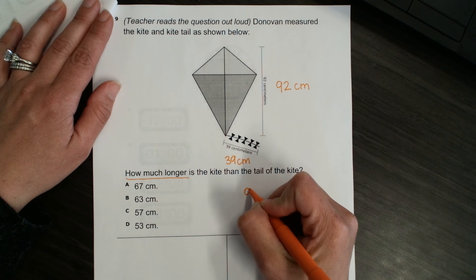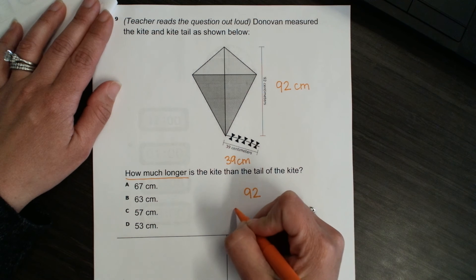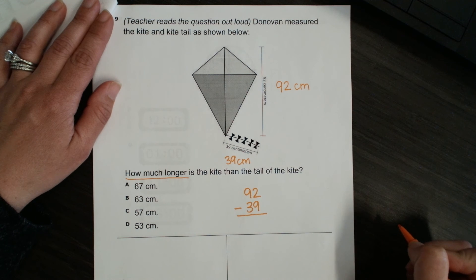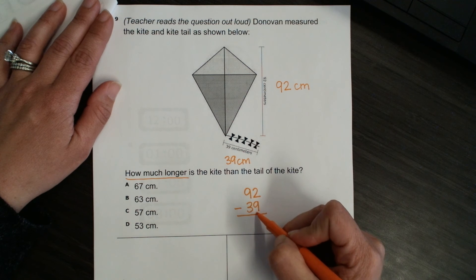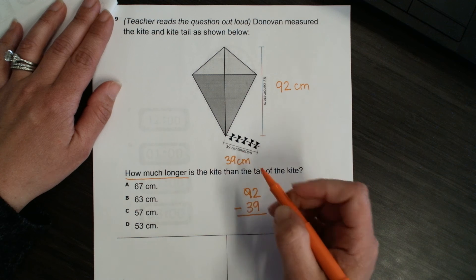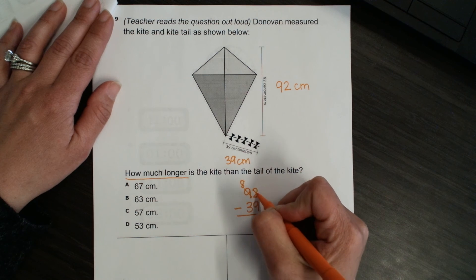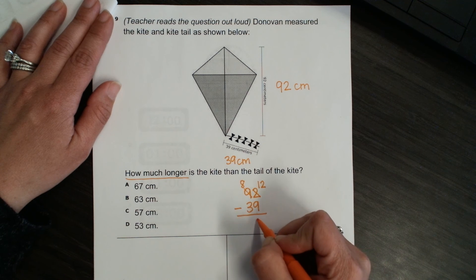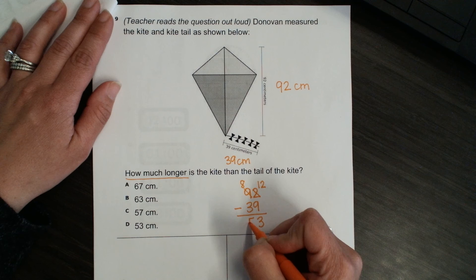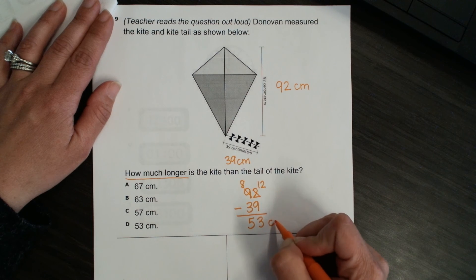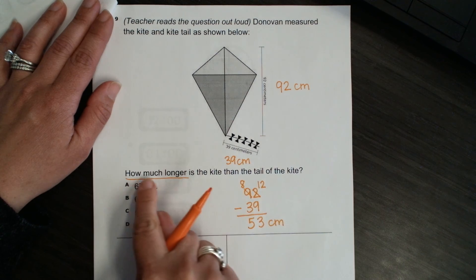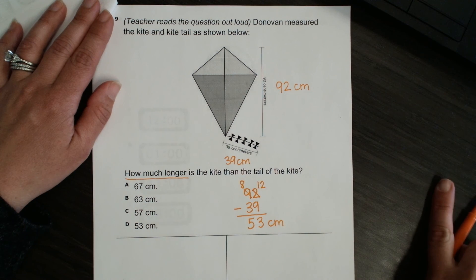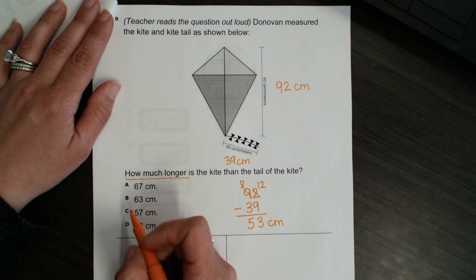So, I'm going to stack to solve 92 minus 39, and now I have to subtract. I have more on the floor, so I've got to go to my neighbor. The nine will change to an eight, and the two to a 12. 12 minus nine is three. Eight minus three is five. So, my answer of the difference between the length of the kite and the tail of the kite is 53 centimeters.